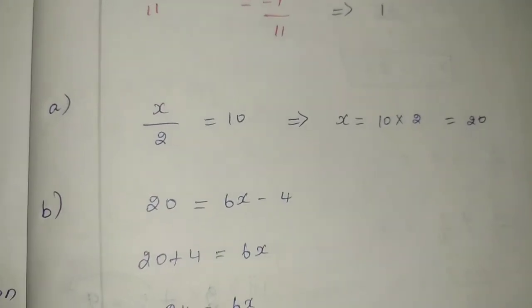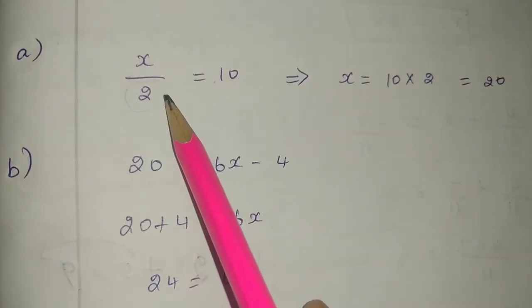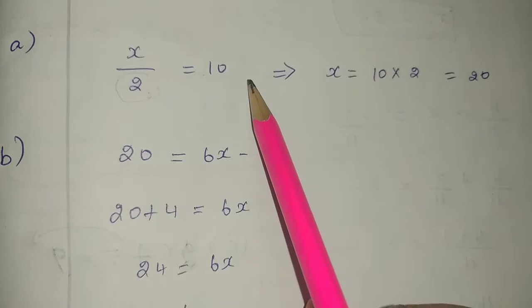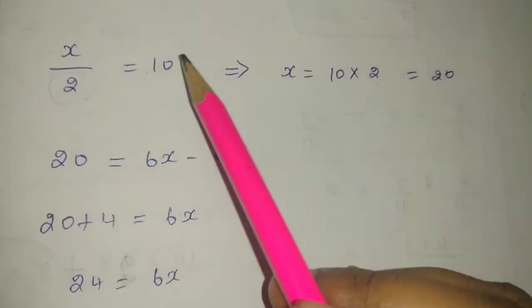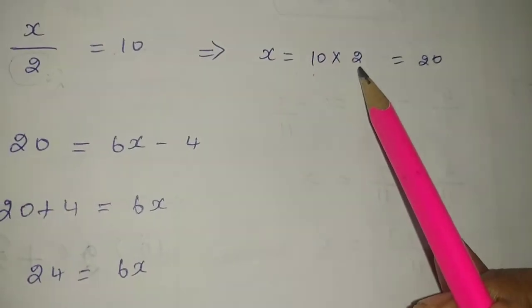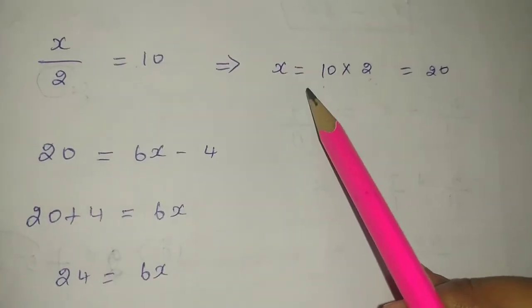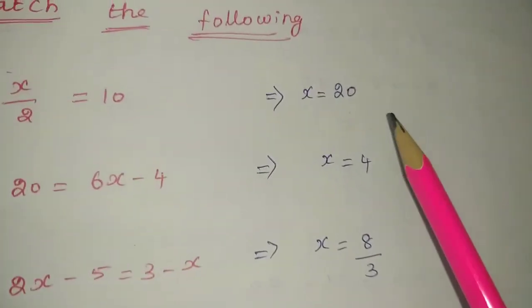First, x by 2 equals 10. What is the value? Division. So when we transpose to the opposite side, it's multiplication. So x equals 10 times 2. The division value transposed to the opposite side, so x equals 20. First answer is 20.